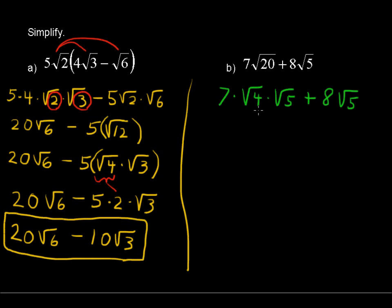So we can then simplify this √4 as 2, or evaluate that square root as 2. So 7 times 2 times √5 plus 8√5. Now you have 14√5 plus 8√5.